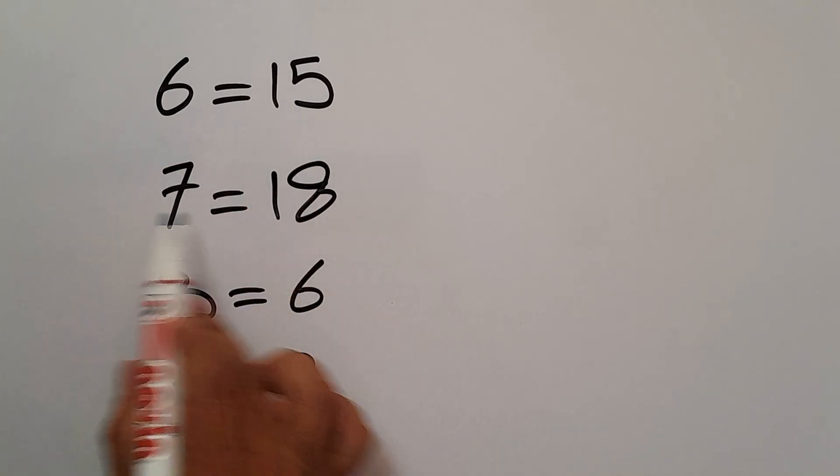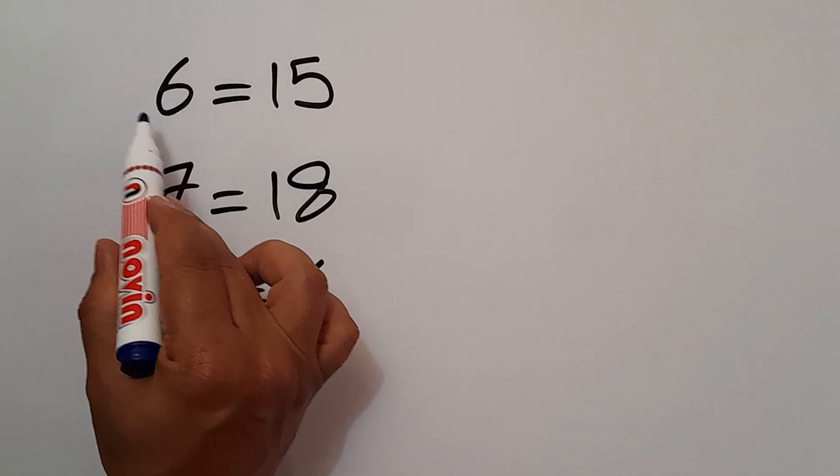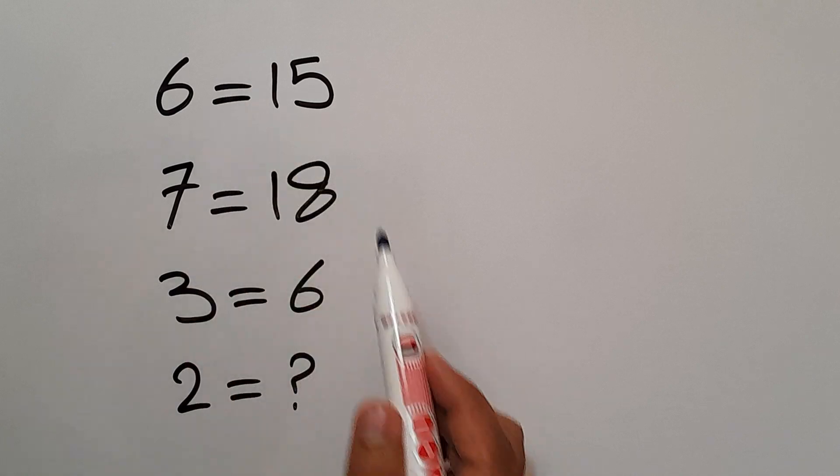In each line, we have two numbers. And we need to find the relationship between the left-hand side number and the right-hand side number.